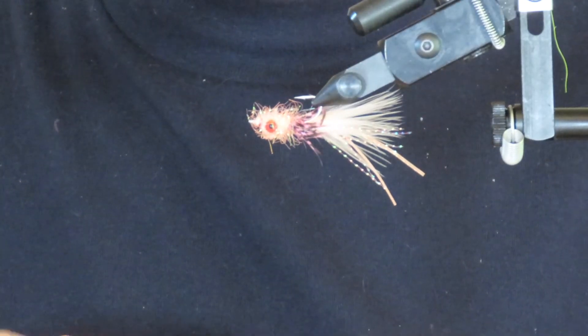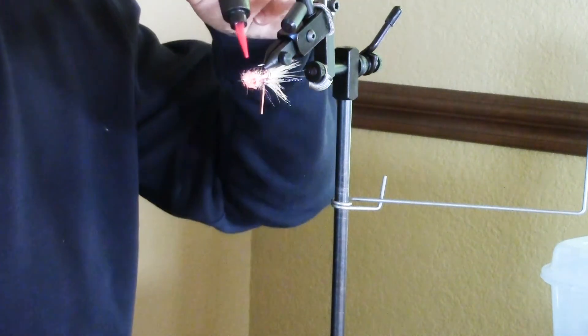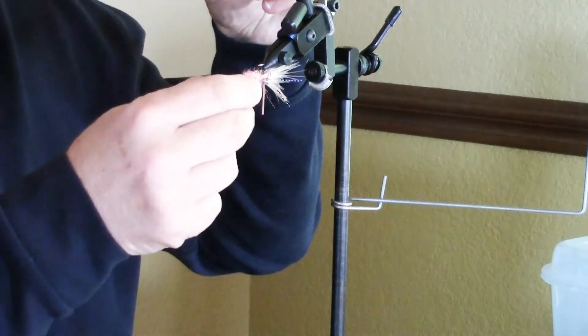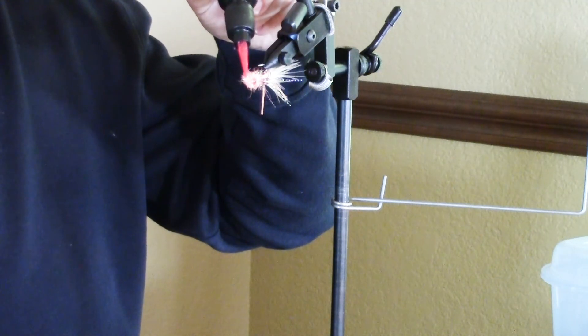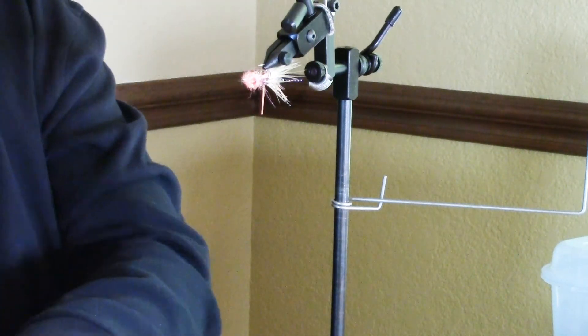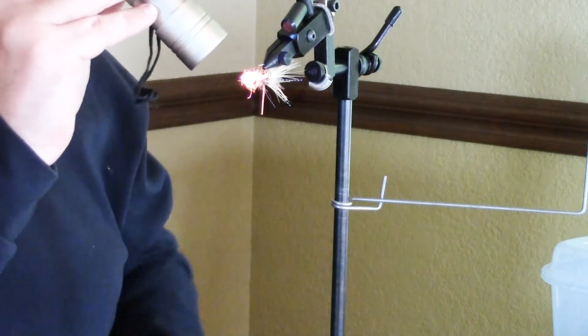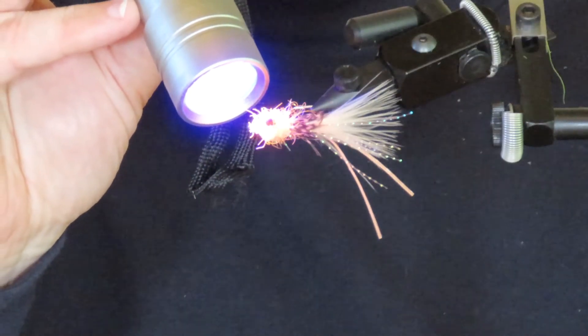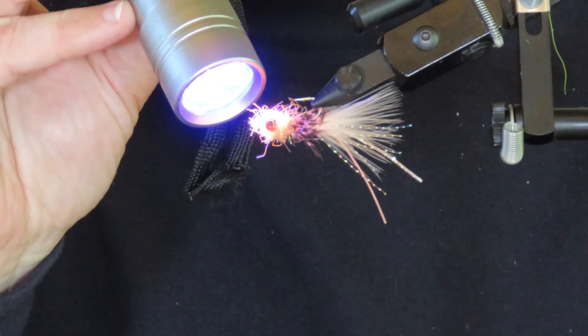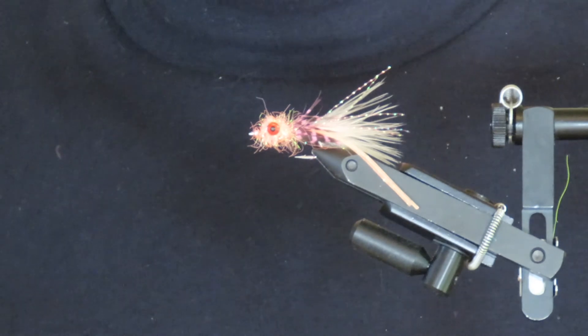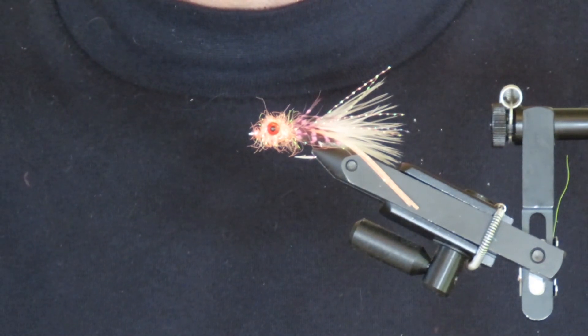All that remains is to just add a tiny drop of your favorite head cement or Sally Hansen's, whatever you like, to that whip-finish knot. I like to use this Loon UV fly finish—love the stuff. Give it some rays, and that is it: the P.O. Prawn. It's a very effective saltwater fly and it'll catch coho salmon as well as cutthroat trout. Don't forget to pinch off that barb. I hope you enjoyed the video, and please let me know in the comments if you give this a try.